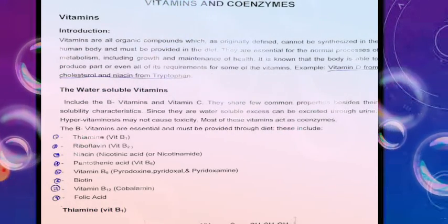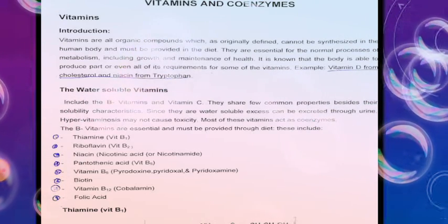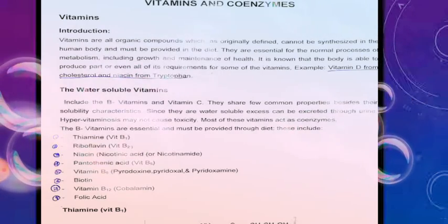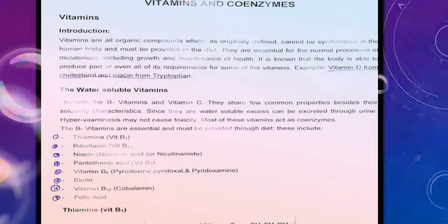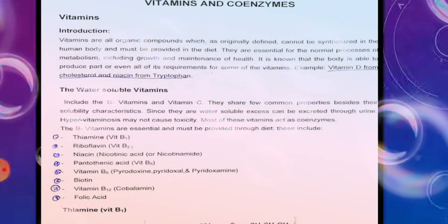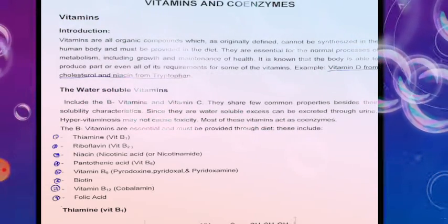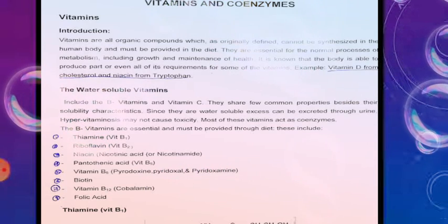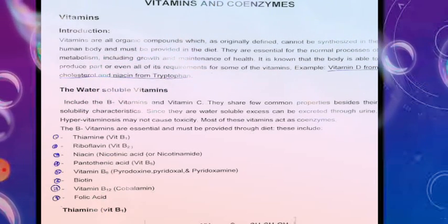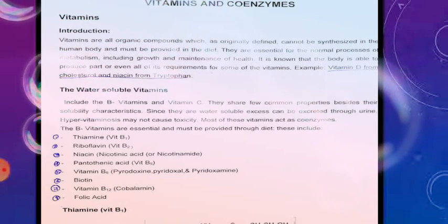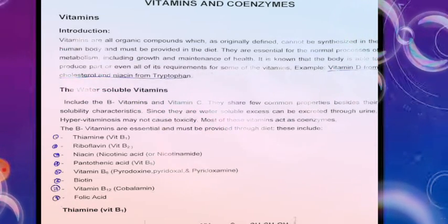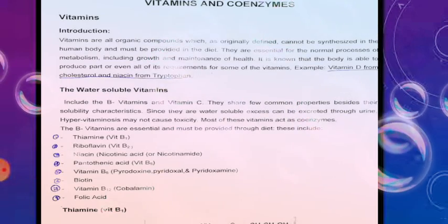When we take foods, plant products, fruits, or vegetables, they contain various types of vitamins that enter our body and drive metabolic reactions, helping our growth and maintenance of health. It is known that the body is able to produce part or all of its requirements for some vitamins — for example, vitamin D from cholesterol and niacin from tryptophan. Some vitamins are water-soluble and some are fat-soluble.